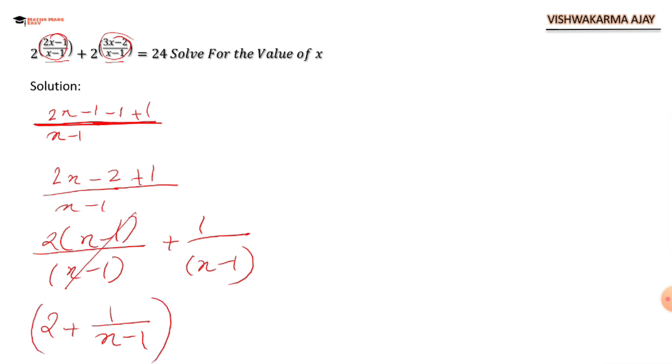Remember this is all in the power: 2 to the power (2 plus 1 upon x minus 1). Similarly we are going to work on the second term that is 3x minus 2. So we will be writing this as 3x minus 2 minus 1 plus 1 whole divided by (x minus 1).